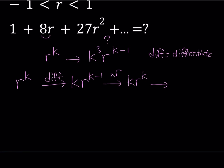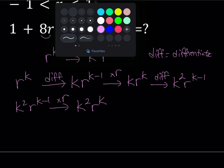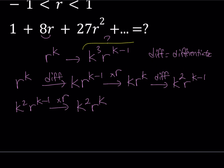The next step is differentiating again. Differentiating k·r^k gives k squared times r to the power k minus 1. Then I take that expression and multiply by r again, giving me k squared r to the power k. Remember, this is the term we're trying to get: k cubed r to the power k minus 1. I'm at k squared, and I have another k, so I can just differentiate once more to get k cubed.